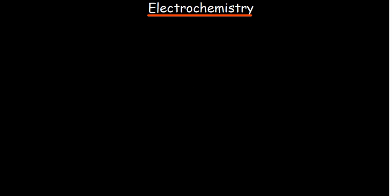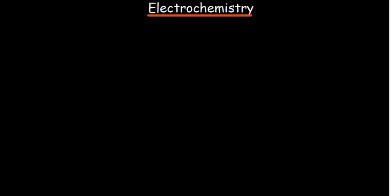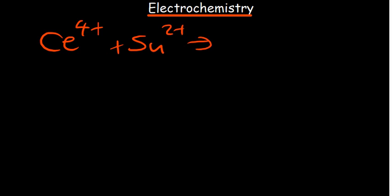Under the study of electrochemistry, which involves the interconnections between chemical and electrical energy, we have a galvanic cell that converts energy from chemical to electrical. We also have another cell involving conversions from electrical to chemical energy. It's very important that you're able to balance the chemical equation for electrochemical reactions.